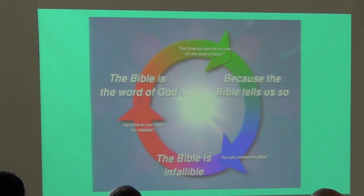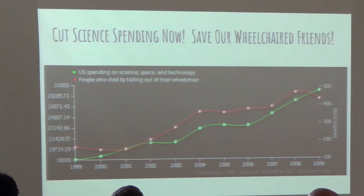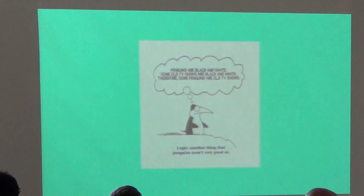My time is running low. For those who can't see the slide: 'Cut science spending now — save our wheelchair friends.' U.S. spending on science, space, and technology directly correlates with people who died by falling out of wheelchairs between 1999 and 2009. So clearly we just need to cut science spending. Just kidding — remember, correlation does not equal causation. That is known as the false cause fallacy.